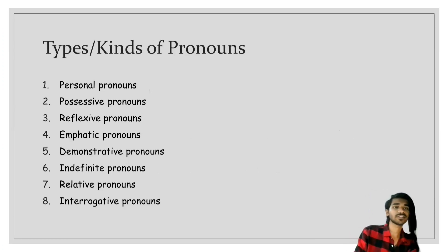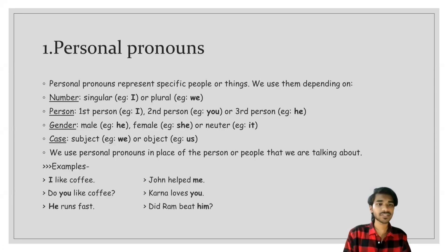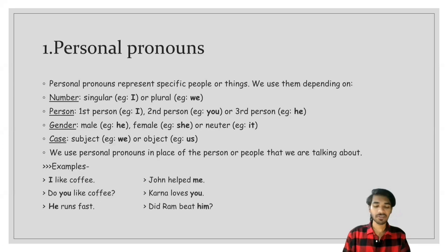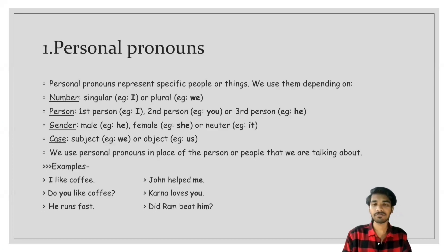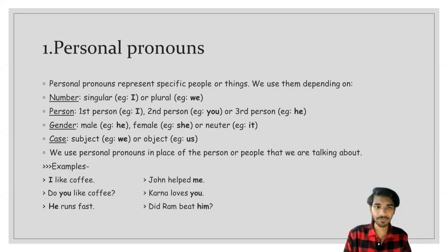The first type is personal pronoun. A personal pronoun represents specific people or things. We use them depending on certain areas such as number, person, gender, and case. In terms of number, singular is 'I' and plural is 'we'. In terms of person, first person is 'I', second person is 'you', and third person is 'he'. In terms of gender, male is 'he', female is 'she', and neutral is 'it'.